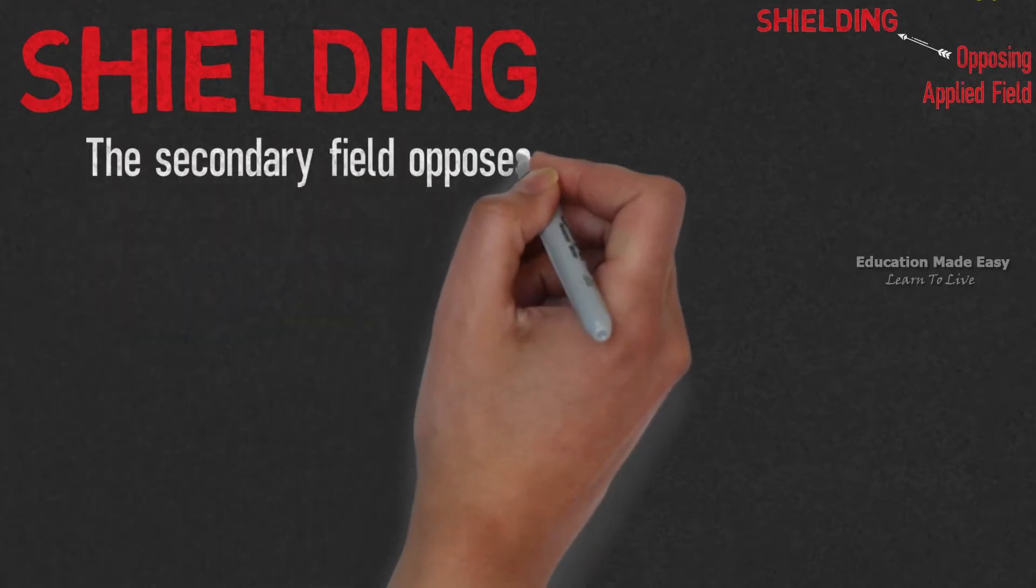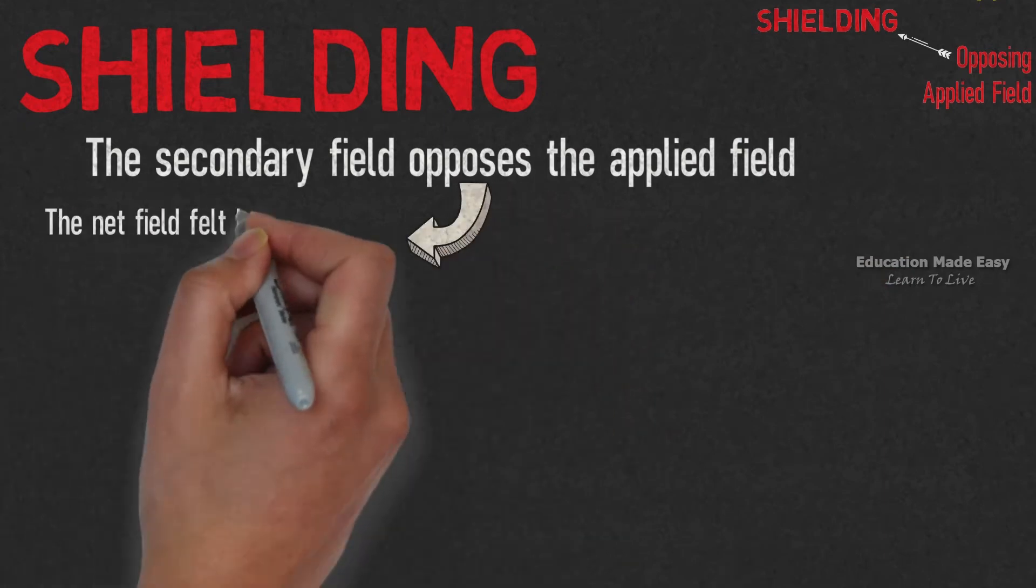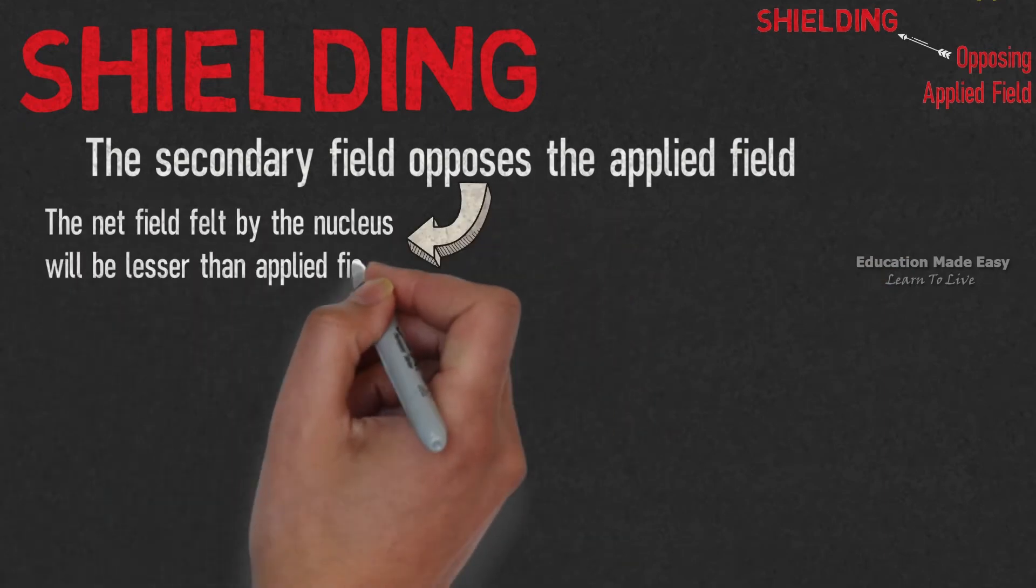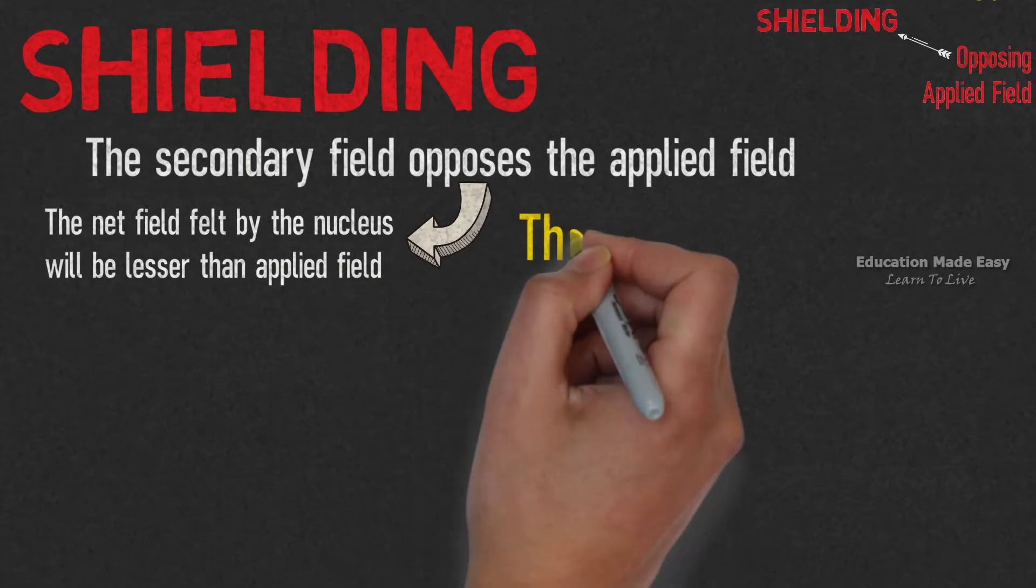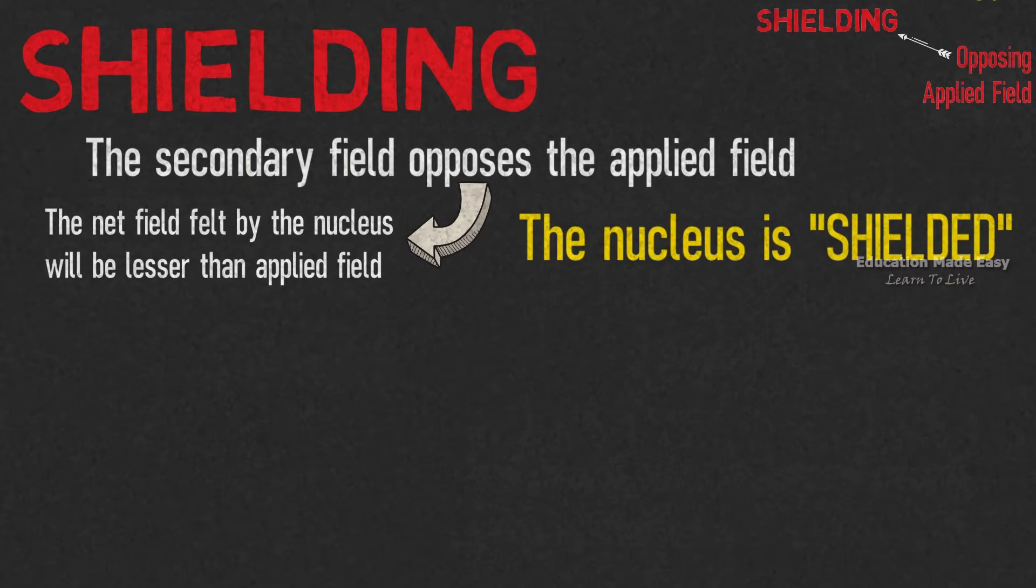Let us first discuss about opposing applied field or shielding effect. Shielding means the secondary field opposes the applied field. Opposing means the net field felt by the nucleus will be lesser than applied field. This implies the nucleus is shielded from the applied field.